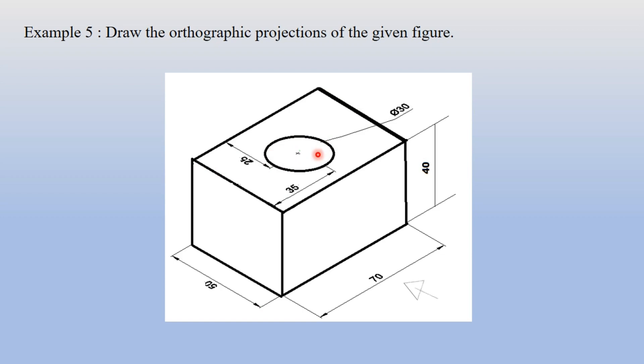Because of this hole only I have taken this question, because this will explain many things related to orthographic projections. There is a concept of hidden lines. There is a concept of drawing the hollow portion. It can be easily understood from this example. So please observe. So here as I have said this circle is very important and the diameter of this is also given.